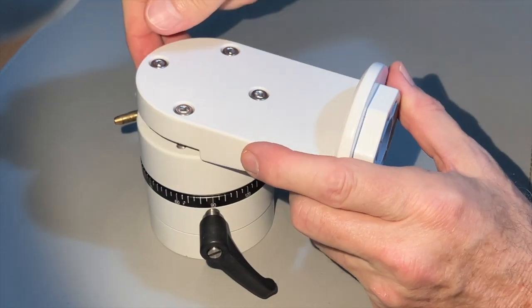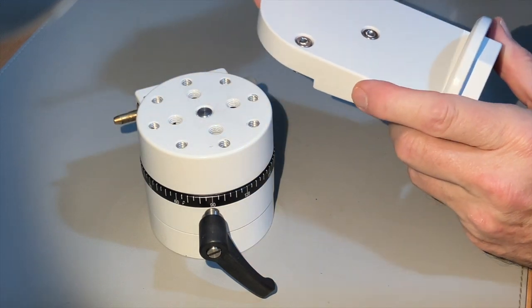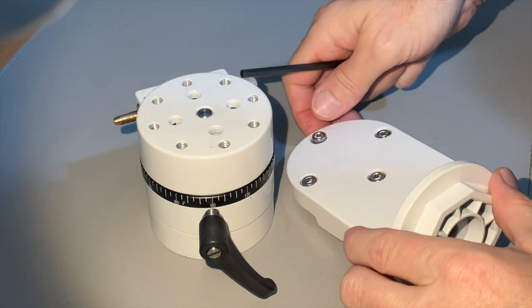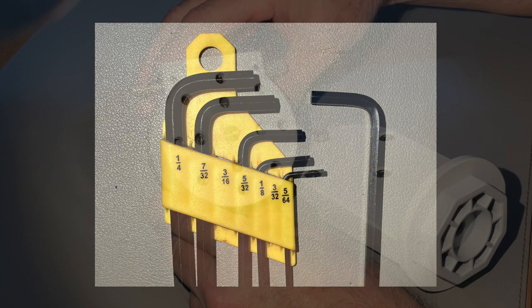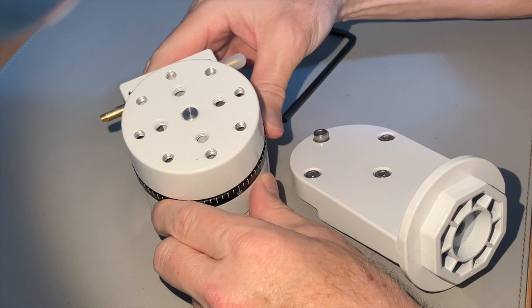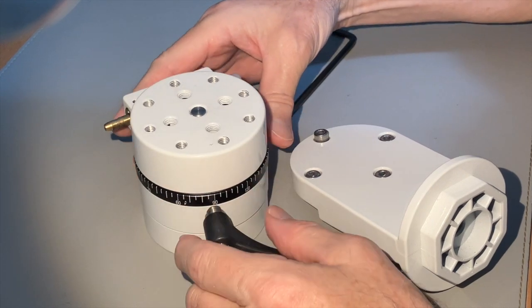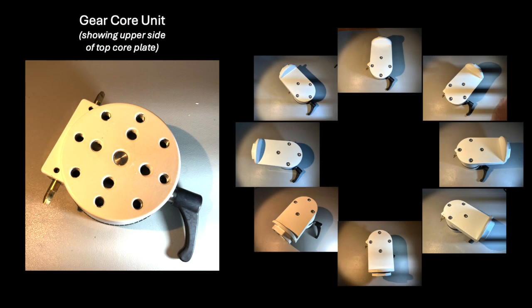The cover plate can be removed by unscrewing the four screws you see here. You will need a 3/16 inch allen key for these four screw heads. Note underneath is the gear core unit. The top core plate has many screw holes. This allows you to shift the position of the cover plate and its altitude extension arm with relation to the fixed movement control rods, if you desire to do that.